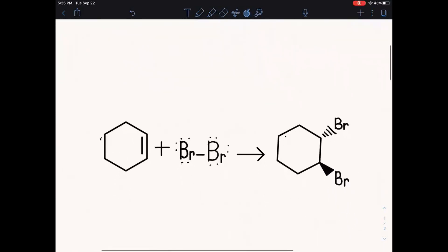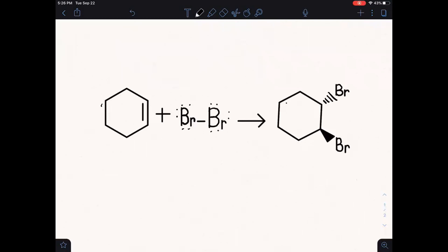Stereochemistry involves the way molecules are situated once they end up in their positions on either side of the alkene. When this bromine bromide molecule reacts with this molecule, one bromine is going to go on one side of the alkene and one bromine is going to go on the other side of the alkene, turning it into an alkane.